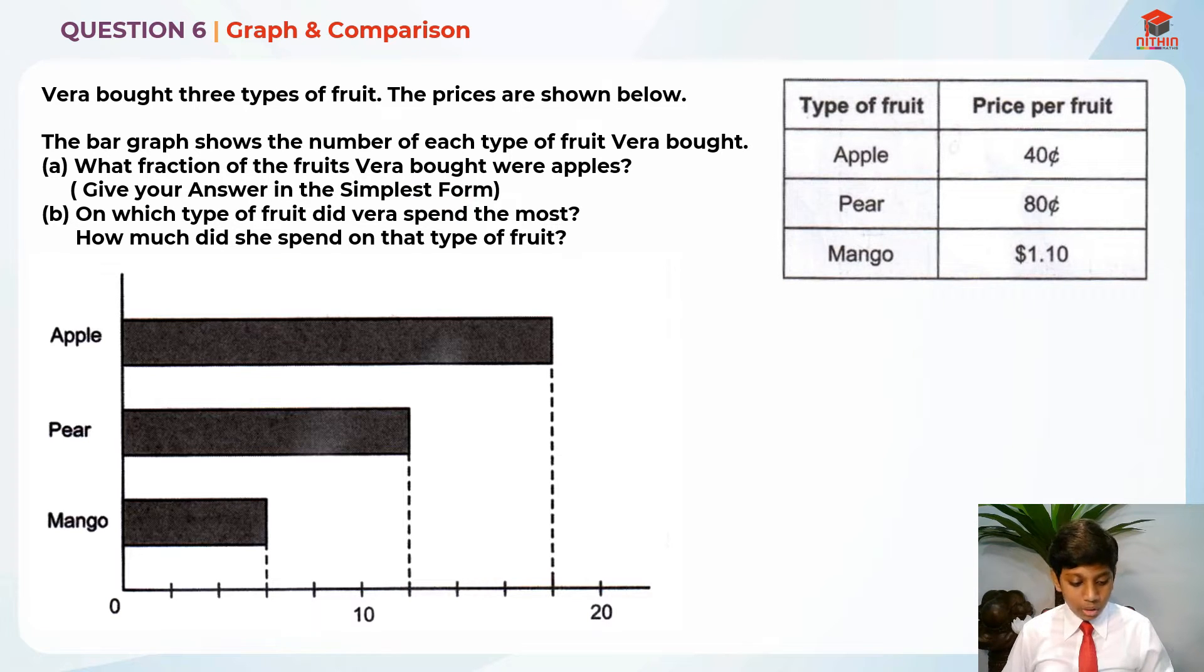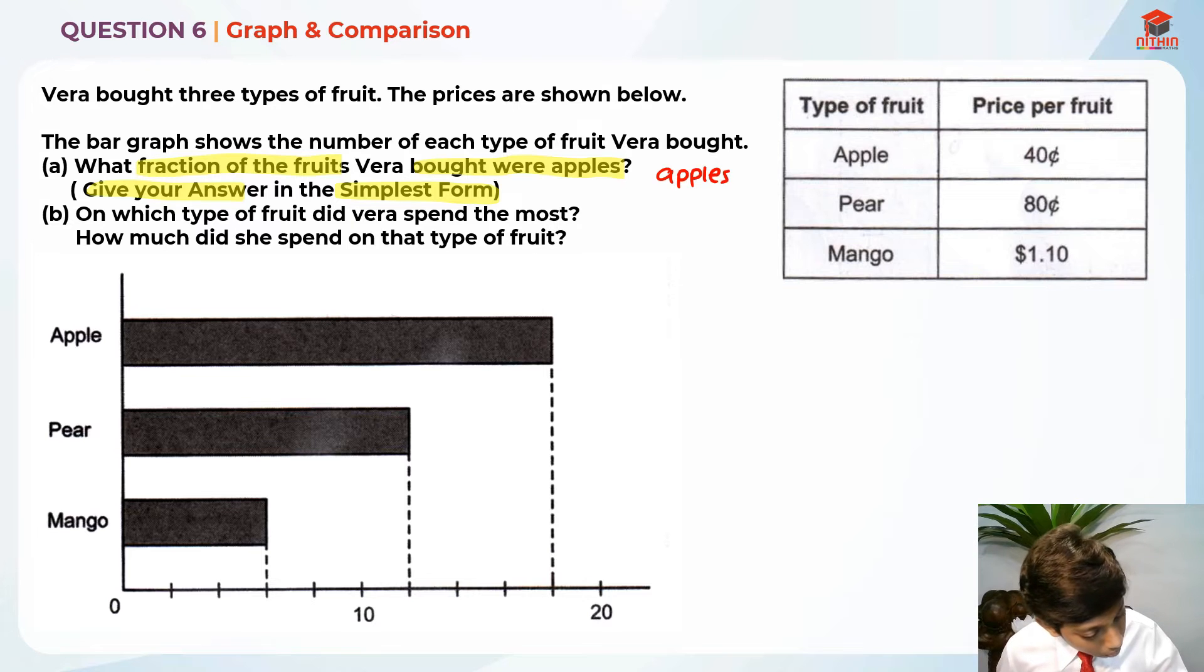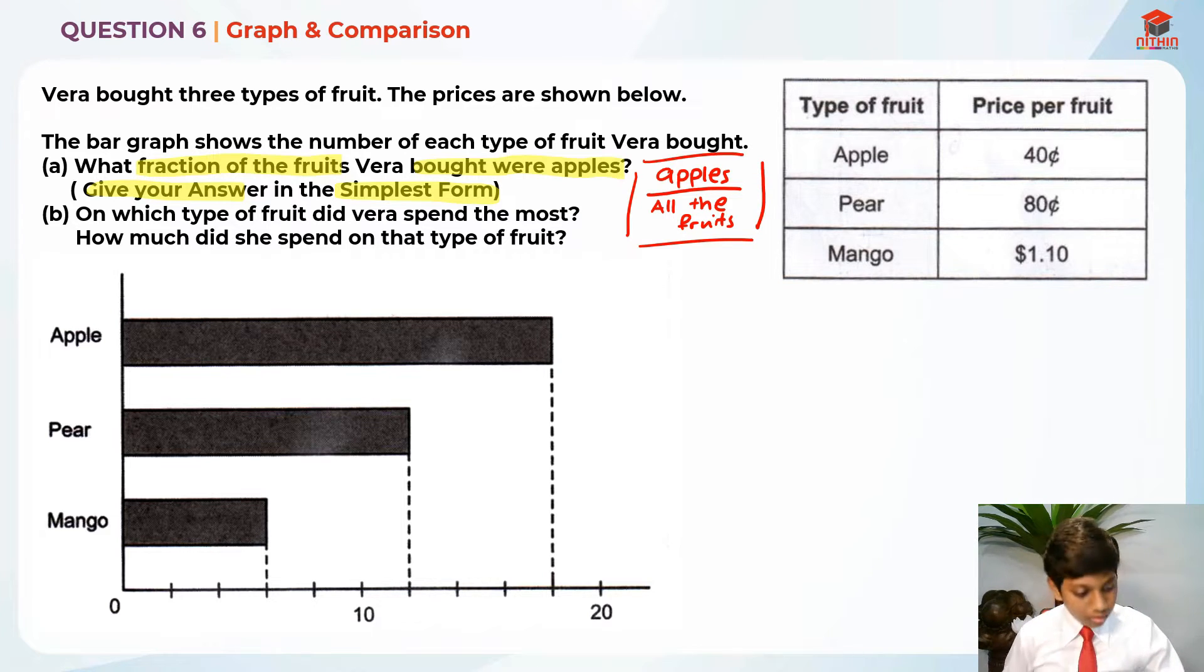Now that we read Part A, let's highlight the key information. The first two sentences are not that important. Just highlight for Part A: What fraction of the fruits Vera bought were apples? They are telling us to give our answer in the simplest form. What the question is actually asking us is to find what is apples over all the fruits. So I hope you understand that.